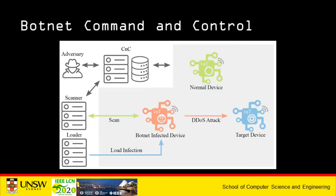Let's see how botnets work. They are made up of sophisticated systems that are integrated with each other. There is a command and control system with distributed databases, which enables adversaries to fulfill their malicious intent. It contains scanners which look for vulnerable devices. The loaders are systems that contain malicious software and scripts that can be loaded onto target devices. The botnets themselves are basically infected IoT devices that are able to perform distributed denial of service attacks and can also propagate onto normal devices to convert them into botnets.